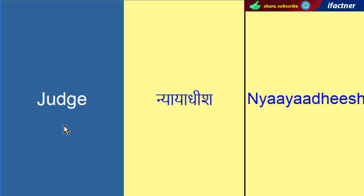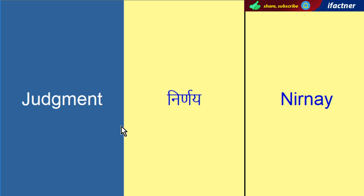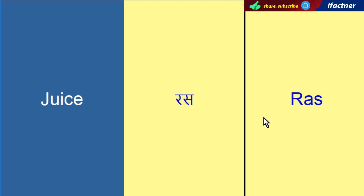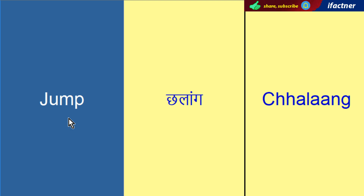Judge — Judge. Ninne — Judgment. Ras — Juice. Chalaang — Jump.